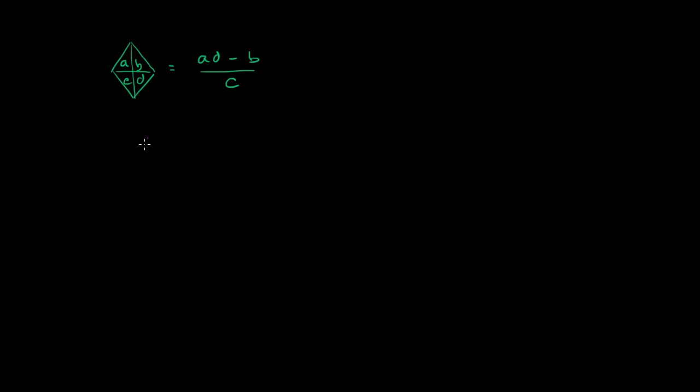And so, if someone were to give you, were to say, evaluate this diamond, where in my little sections of the diamond, I have a negative 1, a 5, a 3, and a 2, we would just use the definition of how to evaluate this diamond.